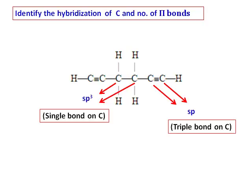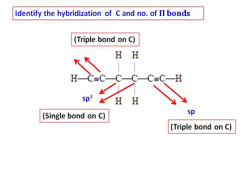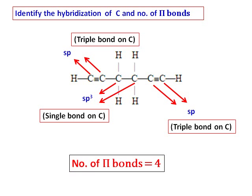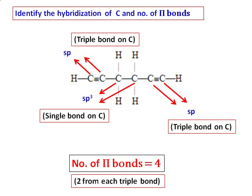Two more carbons have a triple bond between them, so their hybridization is also sp. To count pi bonds: there are two triple bonds, and each triple bond has 2 pi bonds, giving a total of 4 pi bonds in this compound.